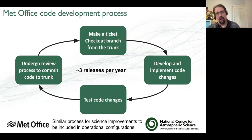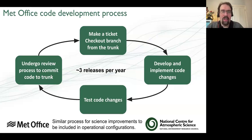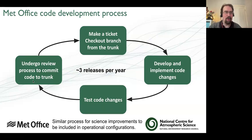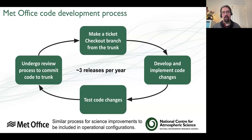All of this is part of the Met Office code development process. It may be that you don't have much interaction with this process, depending on your work. As part of the tutorials, you'll be learning about it - making a ticket, checking out a branch from the trunk, developing and implementing code changes, and testing those changes. What we're not going to cover is the review process to commit code back to the trunk, which can be quite involved. If you want to learn more, I'm happy to talk to you about it. It's an important process - you might do some amazing science, but if it doesn't go back into the trunk, the possibility is it's never used again after you've finished your work.